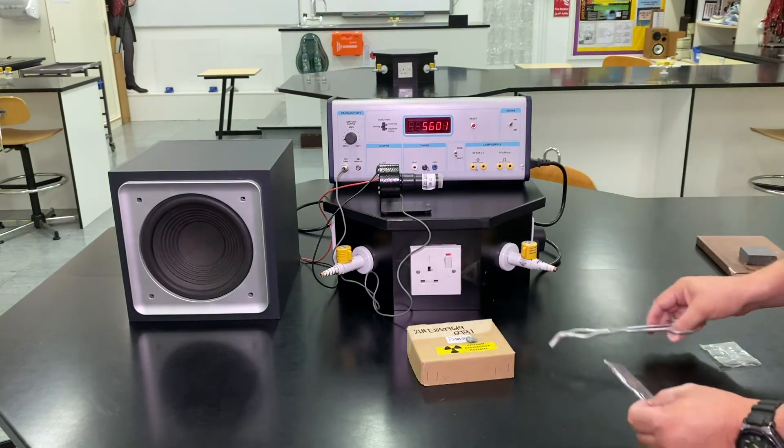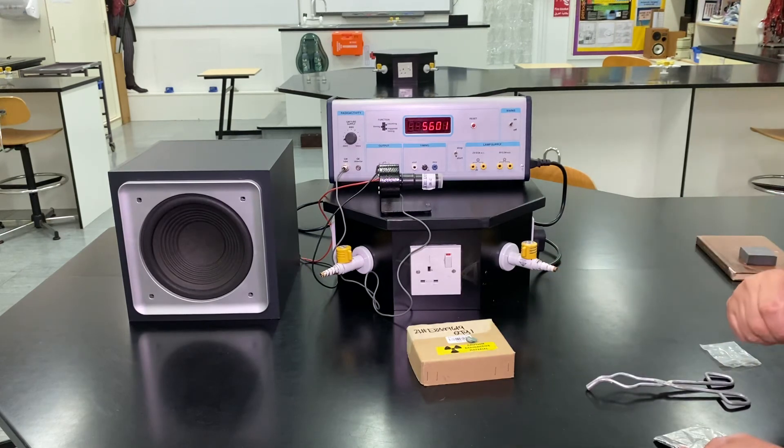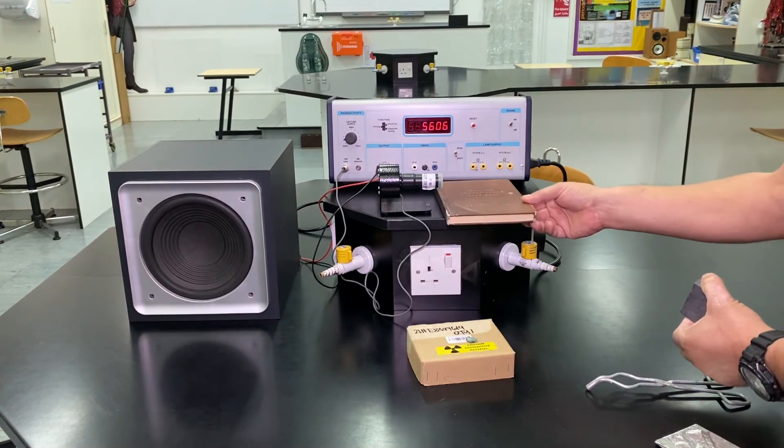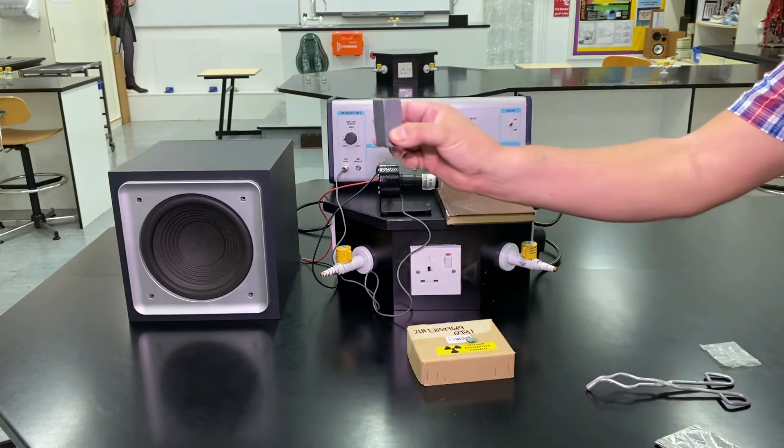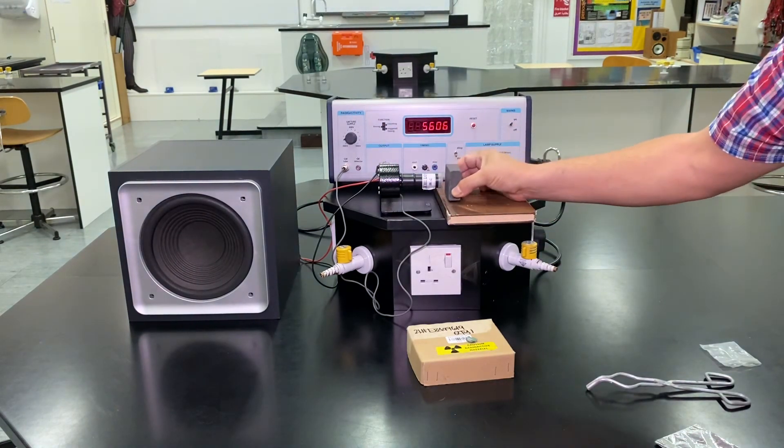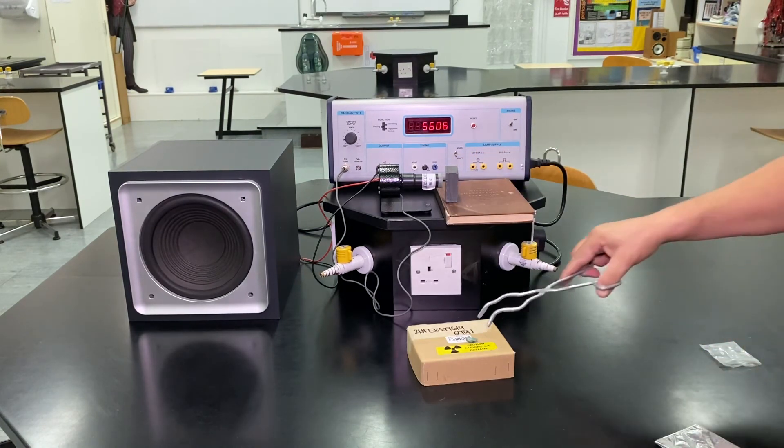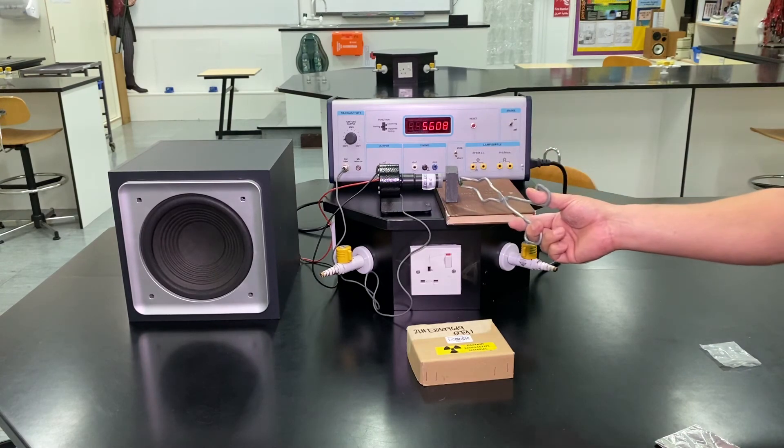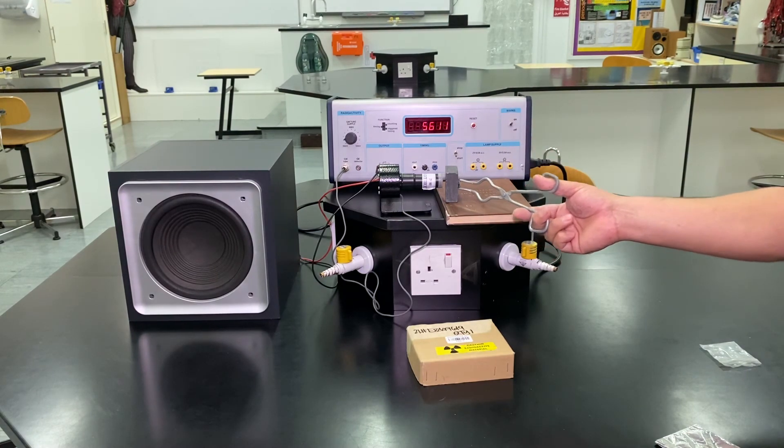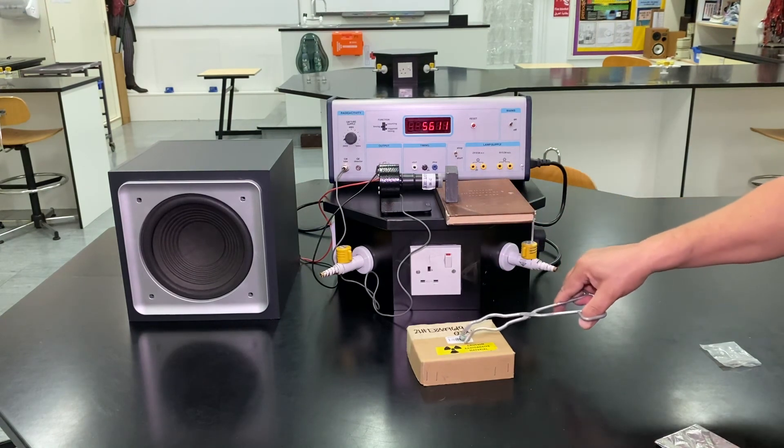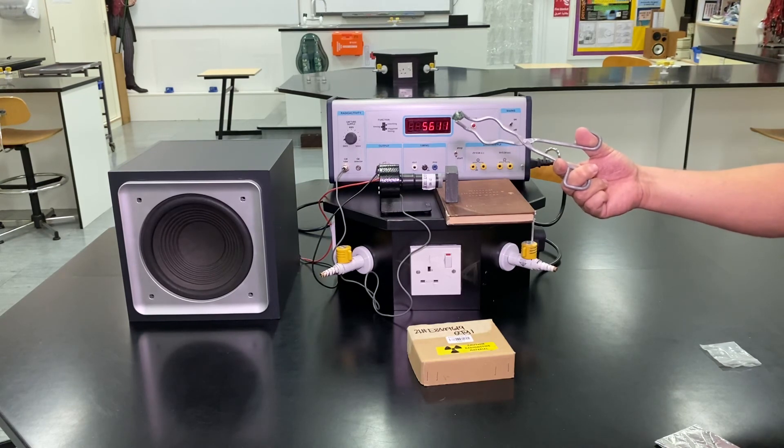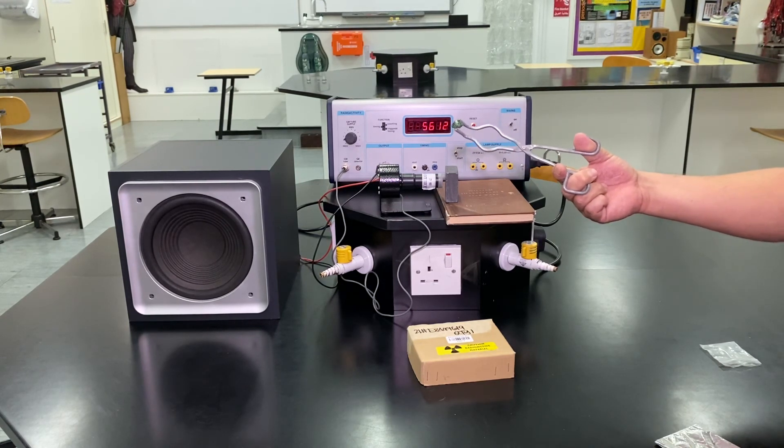So it's safe to assume that there's some beta particles, some beta radiation being given off. Now, what's the thing that stops gamma? Well, hopefully you've found out that it's actually a couple of centimetres of lead that really does the trick there. So let's see how the lead performs. Nothing. So there you have it. This piece of radioactive rock. Pretty sure that that's giving off a small amount of beta radiation and quite a lot of gamma.